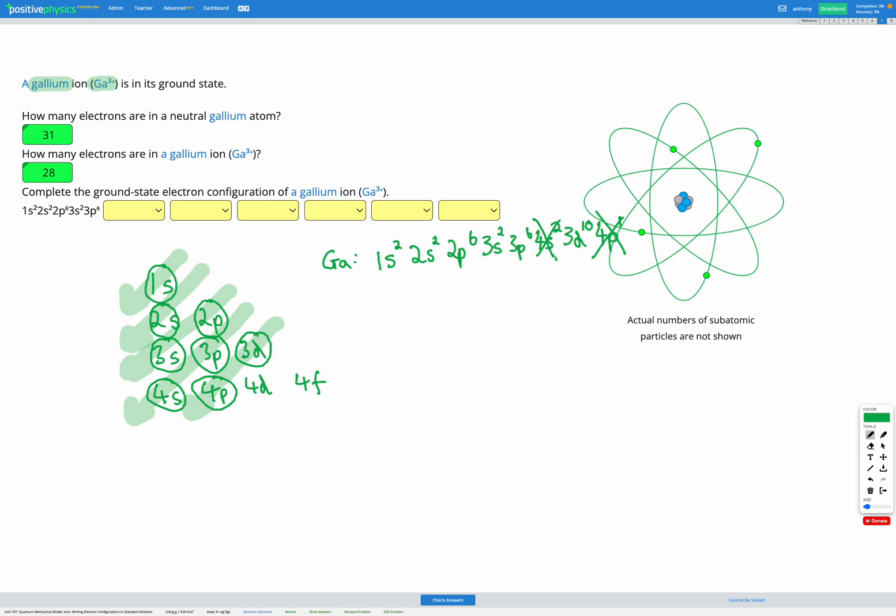That looks slightly different than you might expect because the electrons don't actually get taken out, when we form an ion, the same way that they fill up. They actually get removed from the valence shells first.